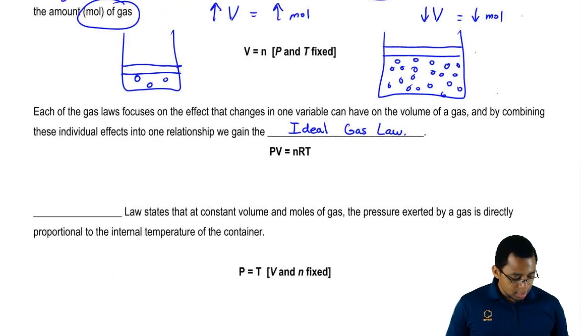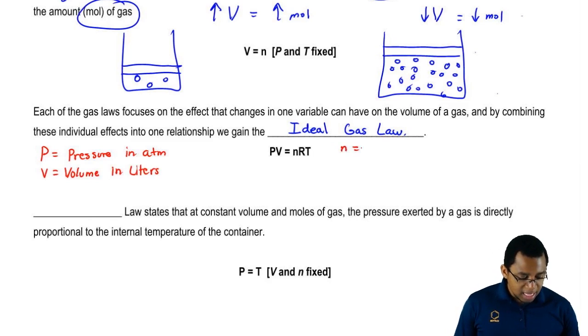We're going to say that P here equals pressure in atmospheres. V equals volume in liters. N equals our moles of the gas. T equals temperature in Kelvin.